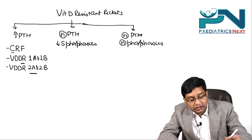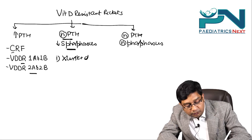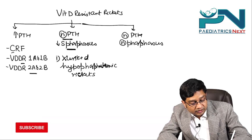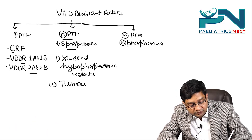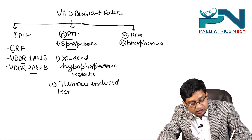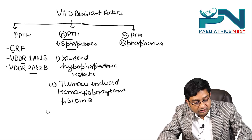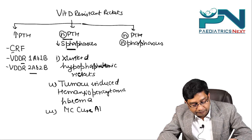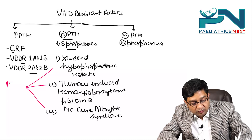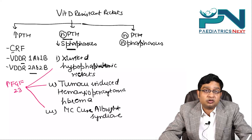In the second group — normal PTH with decreased serum phosphorus — causes include X-linked hypophosphatemic rickets, tumor-induced osteomalacia (including hemangiopericytoma and fibroma), and McCune-Albright syndrome. In all three of these conditions, there is increased fibroblast growth factor 23, whose role was explained in the previous MCQ.